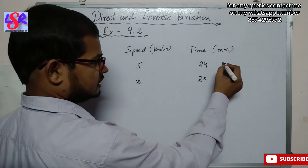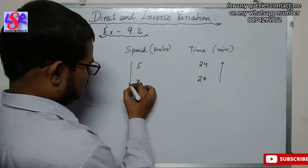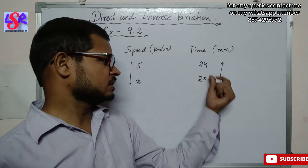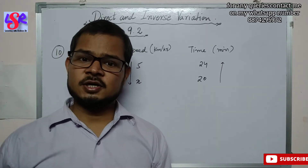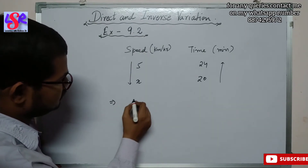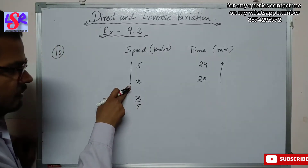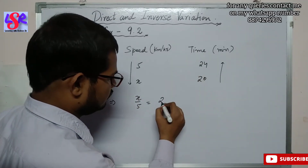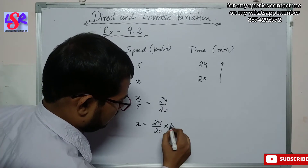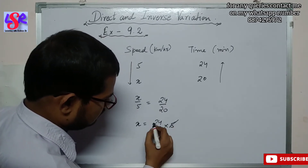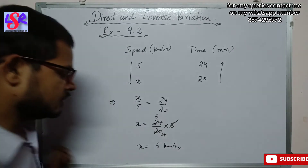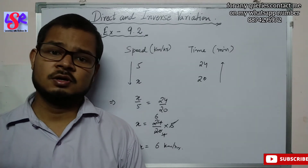We put the arrow in the downward direction for time. Since we are using ratios, there is no need to convert minutes to hours. The equation is: x / 5 = 24 / 20. So x = (24 / 20) × 5. Simplifying: 24/20 cancels to 6/4, giving x = 6. So x = 6 km/h, which is the required speed for Vandana to reach school in 20 minutes.